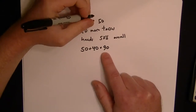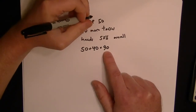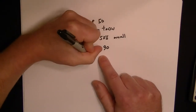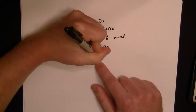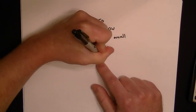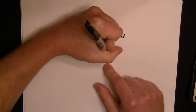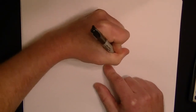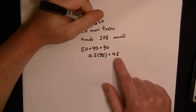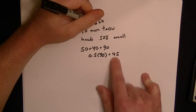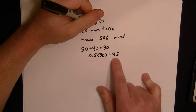We want 50% of those 90 to be heads, so 50% in decimal is .5 times 90, and that means 45 of the tosses have to be heads for 50% of the tosses to be heads. So 45 out of 90 will give us a 50% head ratio.